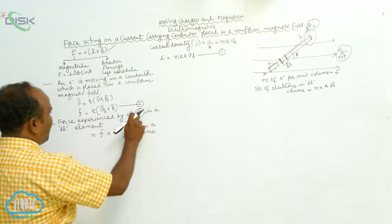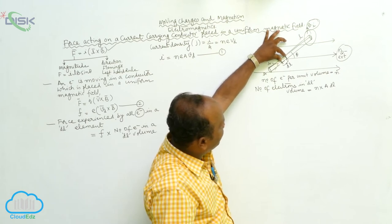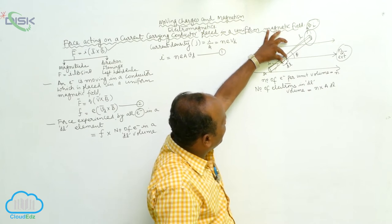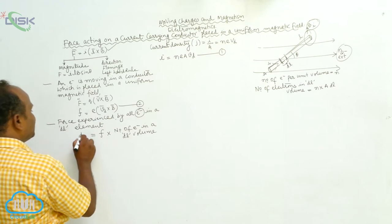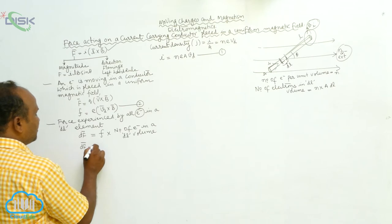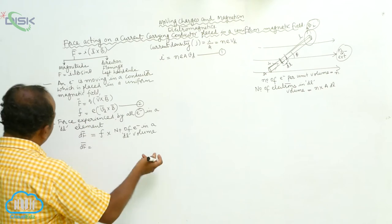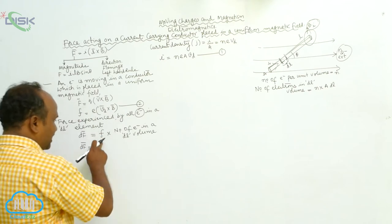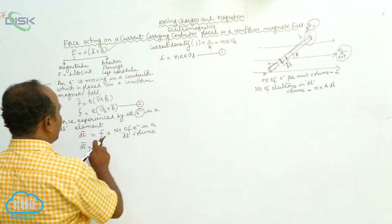Now the force experienced by all electrons in this DL element — there is a particular volume in this DL element, in this small volume — what is the force? That force is represented by DF̄. Therefore DF̄ equals the force experienced by all electrons, which means the force on a single electron multiplied by the number of electrons in a DL volume.